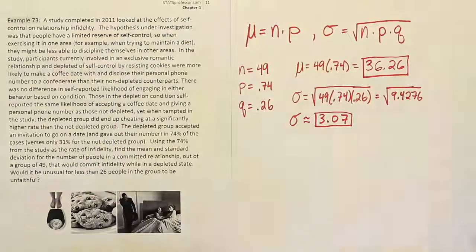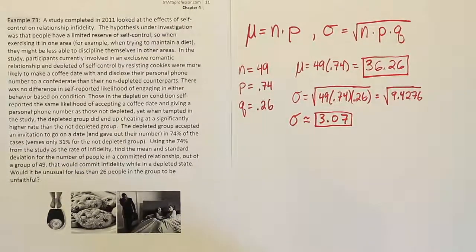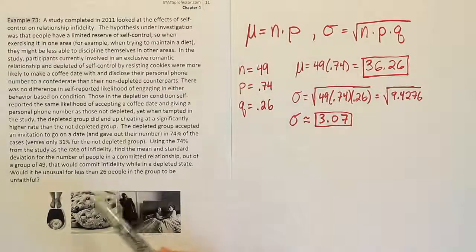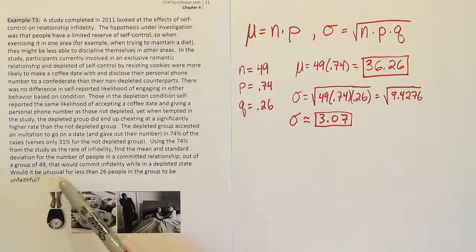Okay. So we've answered the first two parts to the problem, right? We've got the mean and we've got the standard deviation. Now let's answer the important question at the end. It said, would it be unusual for less than 26 people in the group to be unfaithful? So when something is asked like this, if it's unusual, one way you could do it is by using the z-score approach, right?